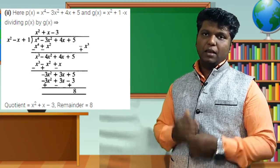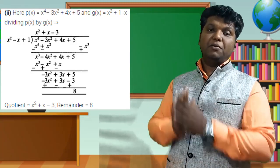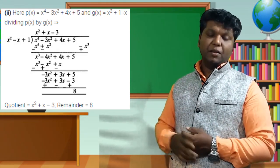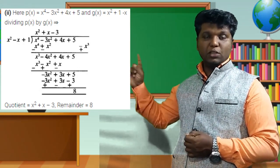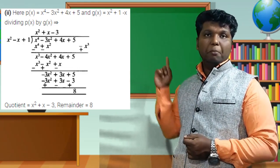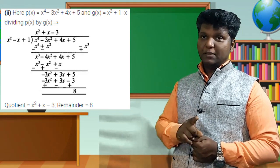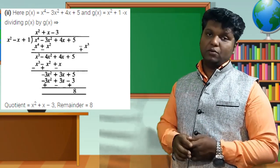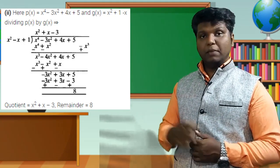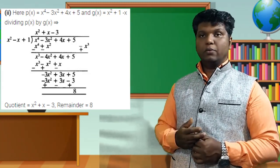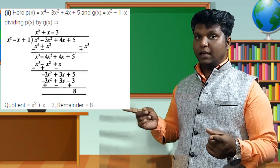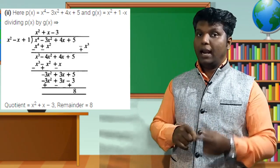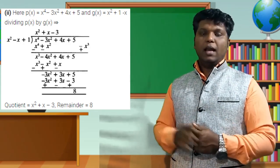Divide −3x² by x² to get −3. Place −3 in the quotient. Multiply −3 by the divisor: −3x², +3x, −3. Subtract: −3x² cancels, 3x cancels, then 5 − (−3): change sign to +3, so 5 + 3 = 8. Remainder is 8. So q(x) = x² + x − 3 and r(x) = 8.